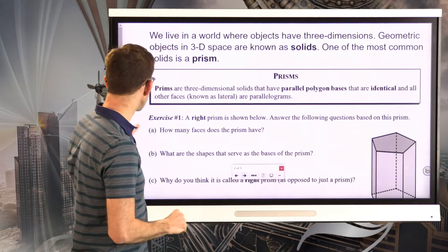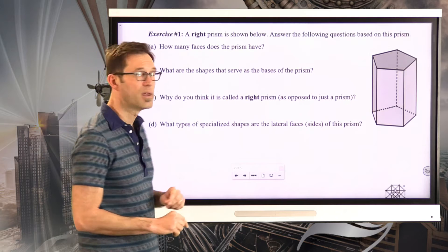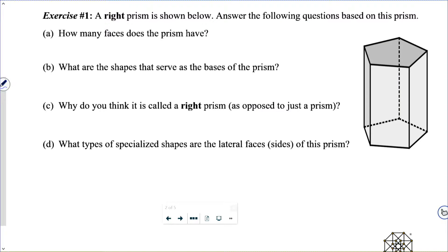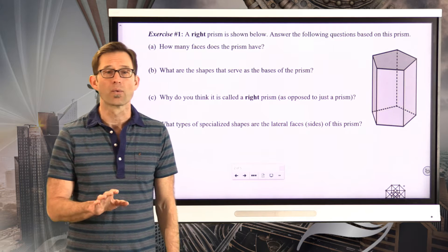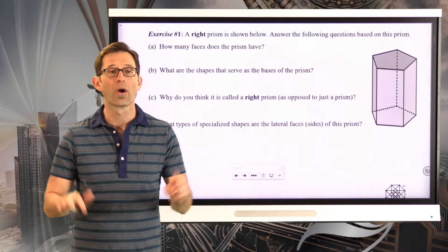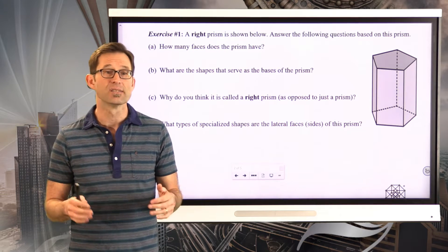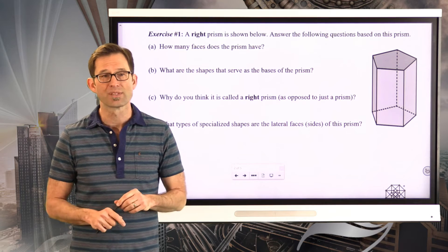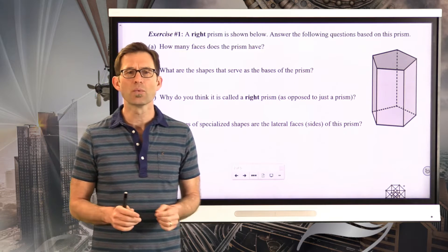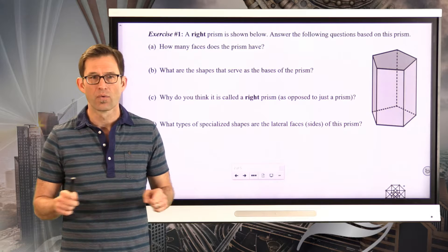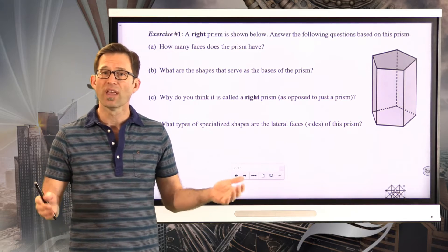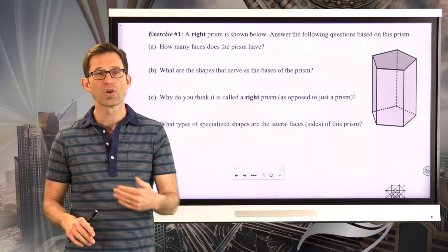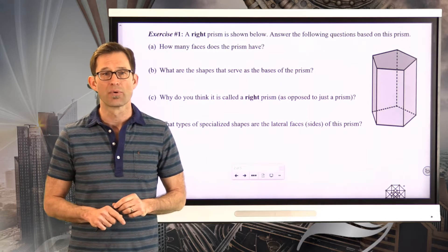Let's take a look at a good example of a prism in exercise number one. A right prism is shown below. For letter A: how many faces does the prism have? With three-dimensional solids, we call their sides "faces" to distinguish them from the sides of a polygon. How many flat two-dimensional objects enclose this particular prism? Pause the video and count.